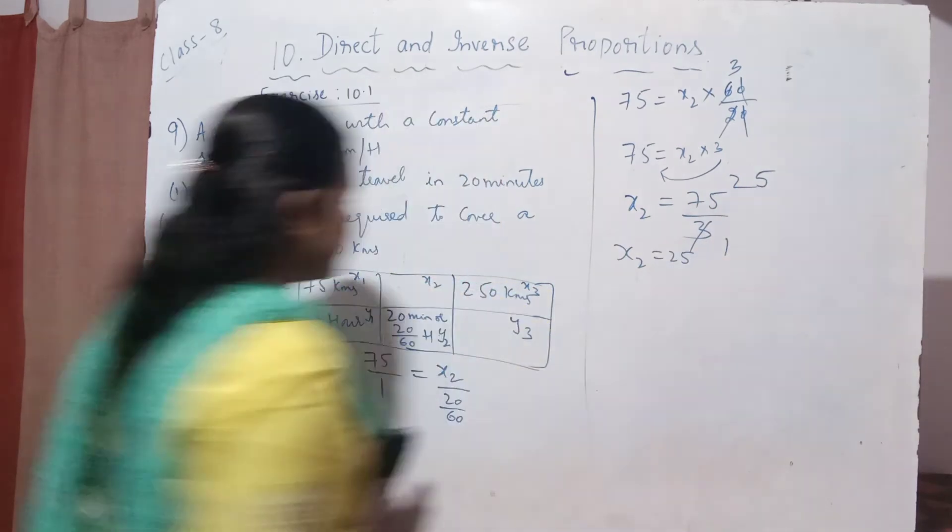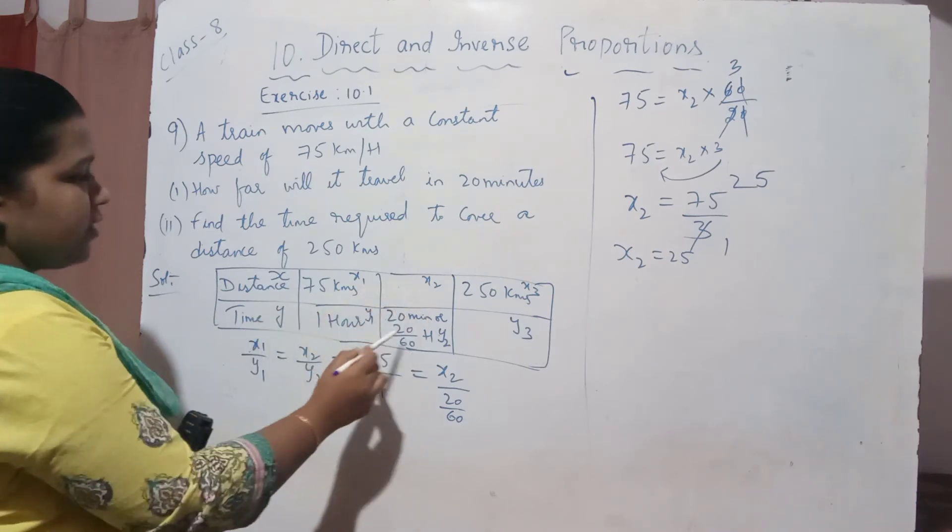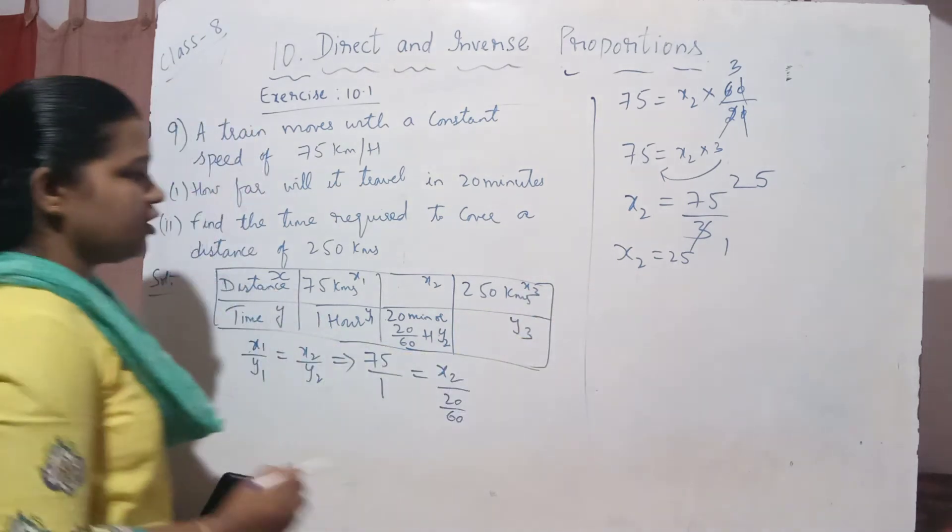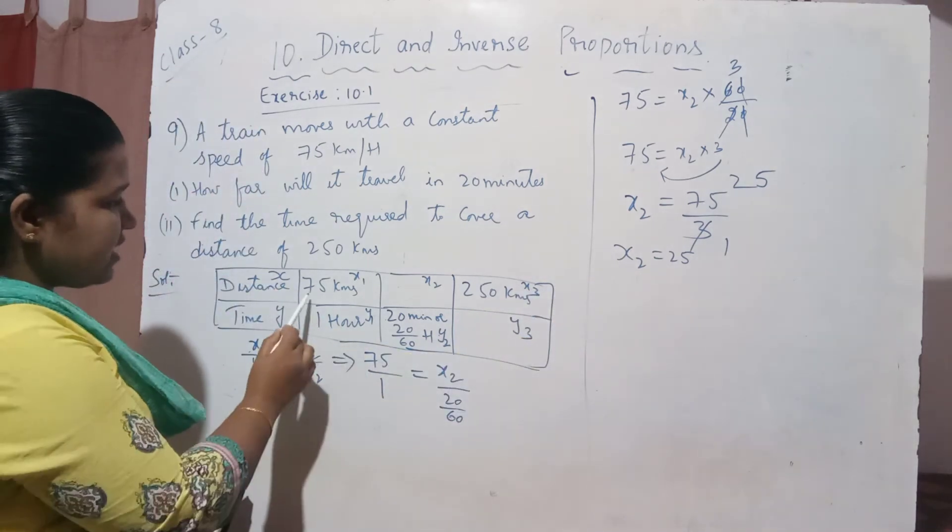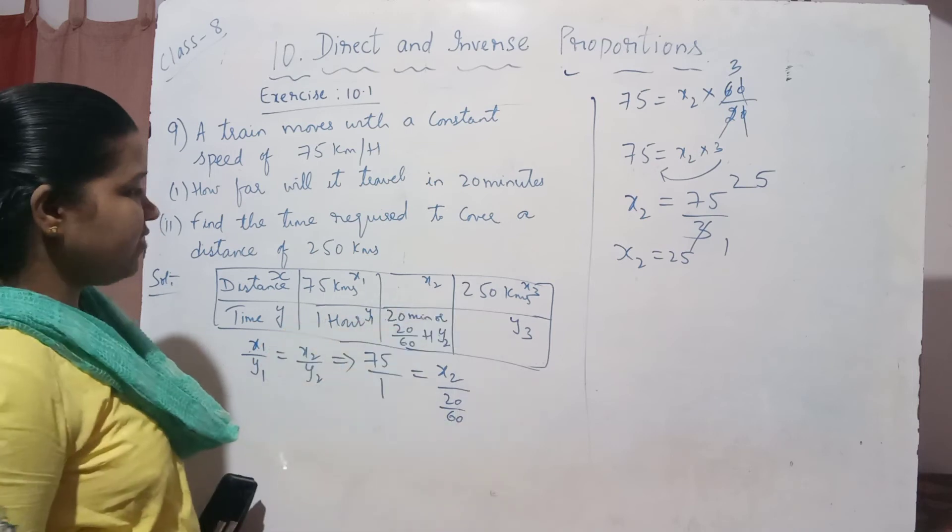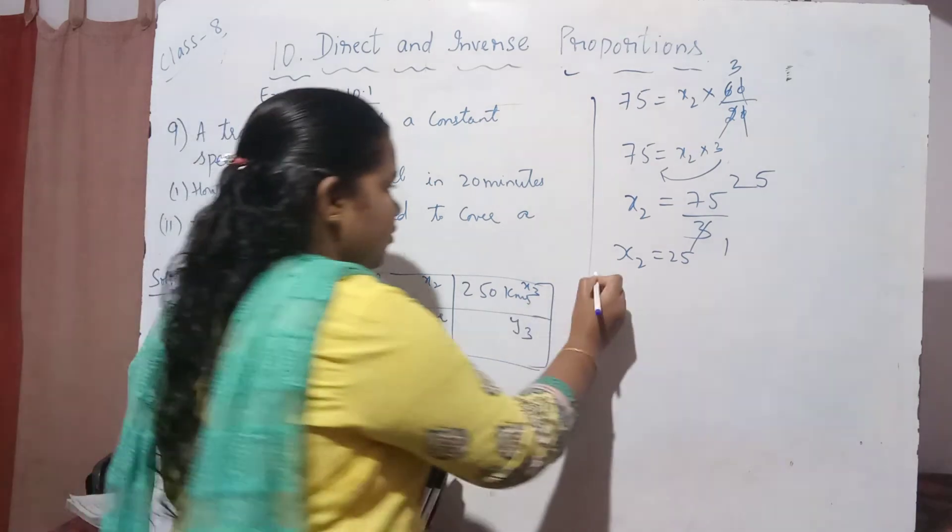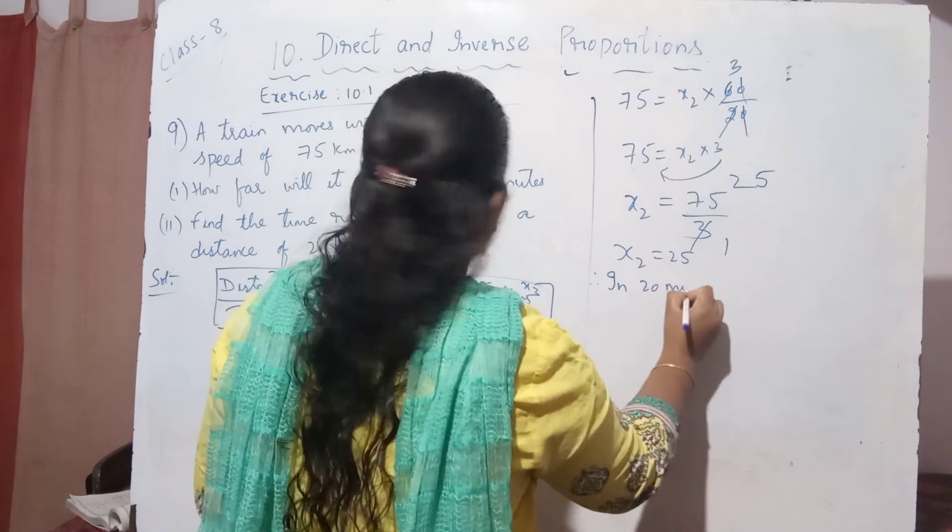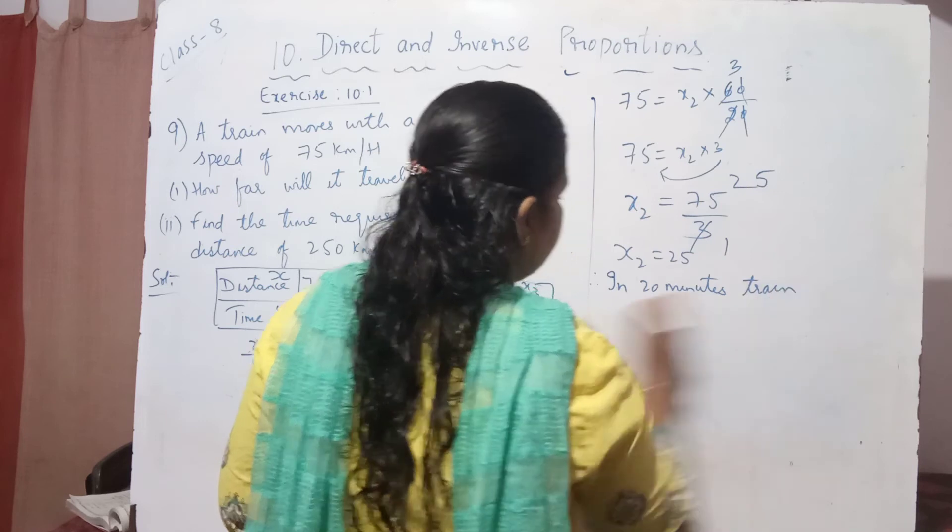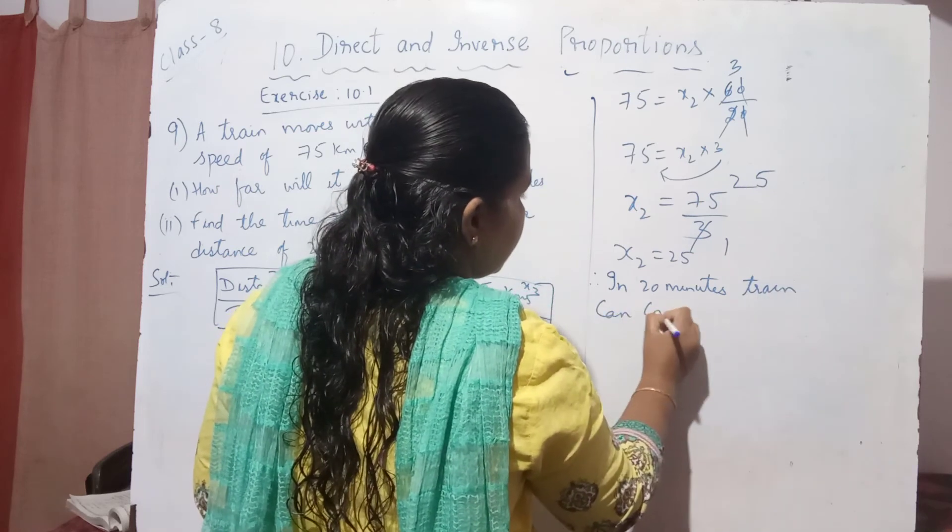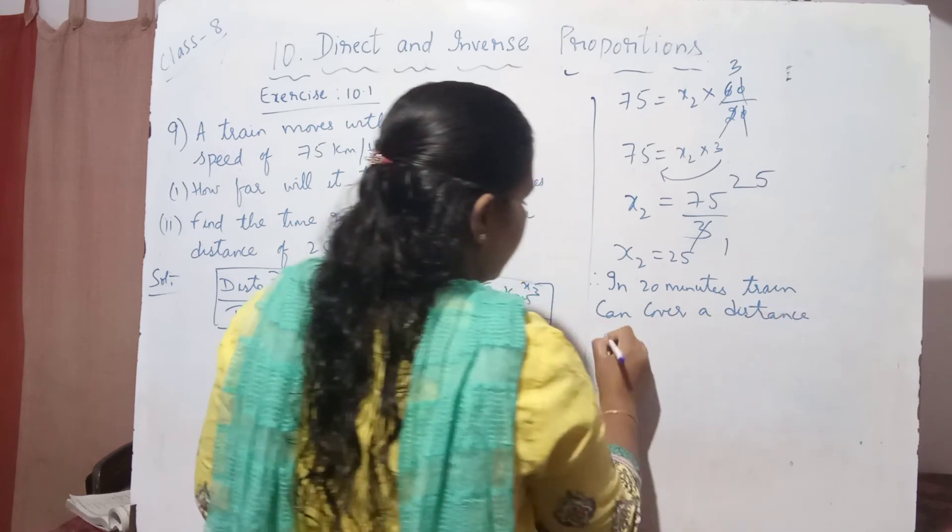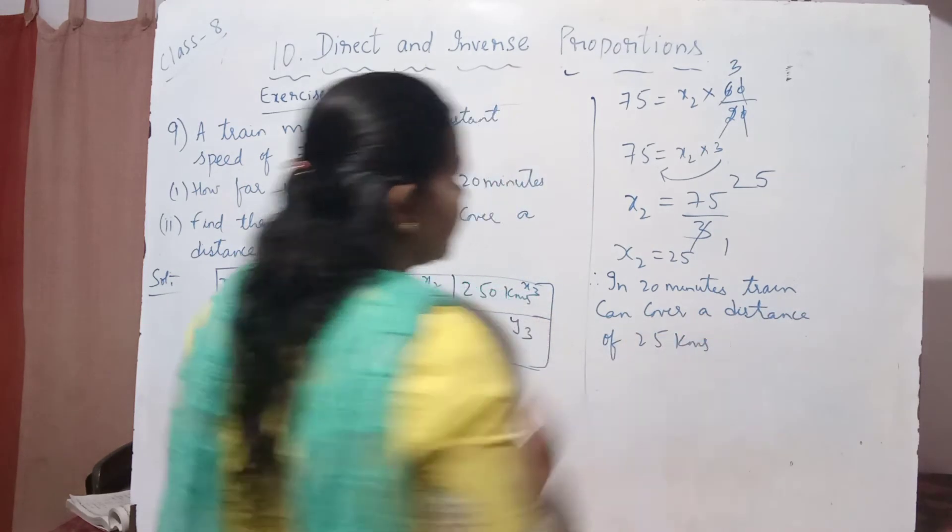What is x2? x2 is the distance travelled in 20 minutes. How much distance is it travelling? 25 kilometers. If you observe here, for 1 hour it is 75. For 20 minutes, it should be less than 75, that is 25 kilometers. Therefore, in 20 minutes, the train can cover a distance of 25 kilometers.